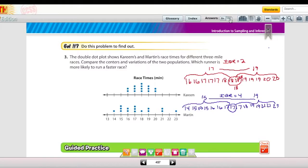In example three, we have a double dot plot showing Kareem and Martin's race times for different three-mile races. Compare the centers and variations of the two populations. Which runner is most likely to run a faster race? We have one of them which is symmetric, Kareem's is symmetric, and if one of them is symmetric, then we're going to use the median and interquartile range. It's pretty easy to tell without lining up the data that Kareem's median is 18. But on Martin's data, I went ahead and listed that out for you so you can see all of those numbers written left to right. 17 is the median for Martin and 18 is the median for Kareem. I found the interquartile range by taking this data right here and finding the median, and then this data right here finding the median: 19 minus 15 is 4.